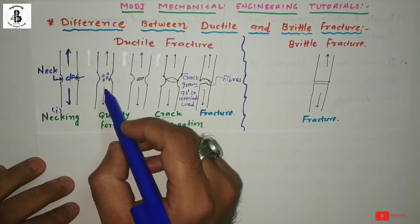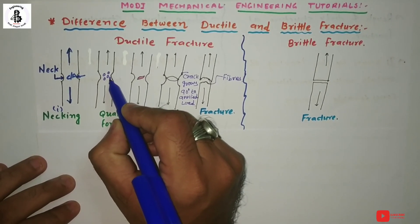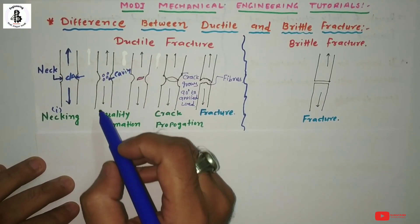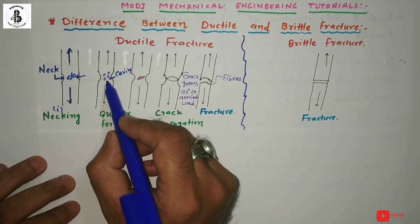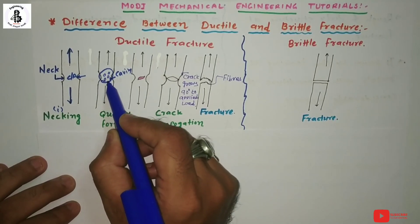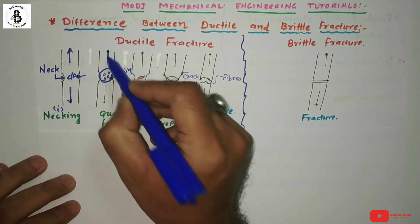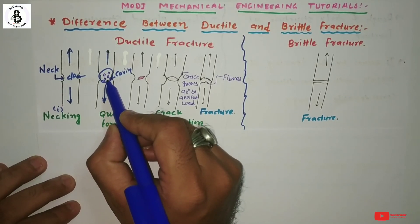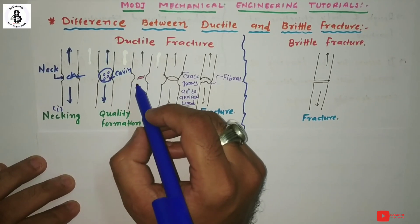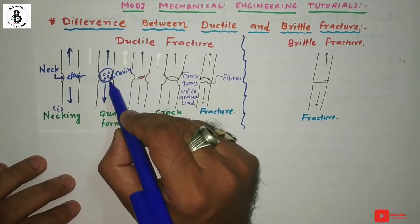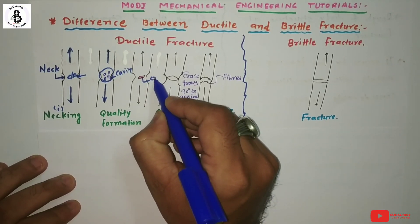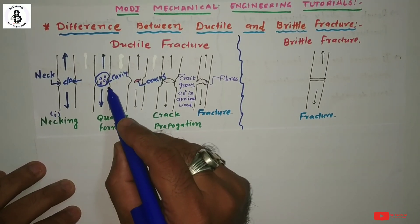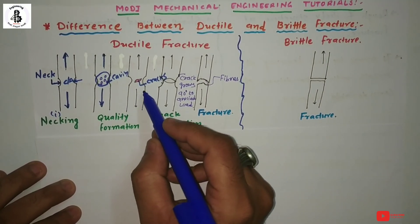After necking, the second part is the formation of cavities. At the necked area there is formation of tiny cavities. Once the load continues in both directions, these cavities collapse and form a crack. That is the third step: cavities converting into cracks by the collapsing process.